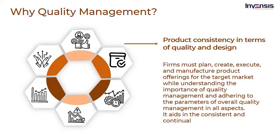Next, product consistency in terms of quality and design. Firms must plan, create, execute, and manufacture product offerings for the target market while understanding the importance of quality management and adhering to the parameters of overall quality management in all aspects. It aids in the consistent and continual maintenance of quality realms. Furthermore, the company is able to perform market research and studies on a regular basis to provide items that are a testament to the company's quality and beliefs.